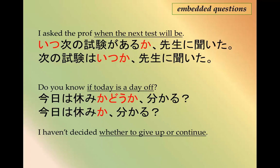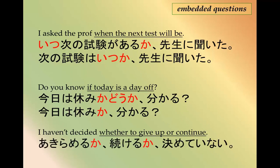And then finally we have: 'I haven't decided whether to give up or to continue.' So you have multiple options, and you use か with each of them — 諦めるか、続けるか、決めていない — having not decided.